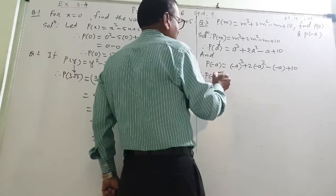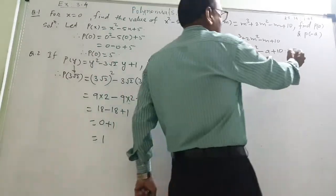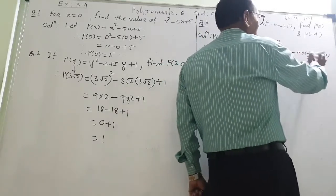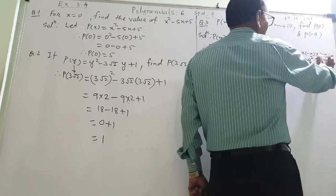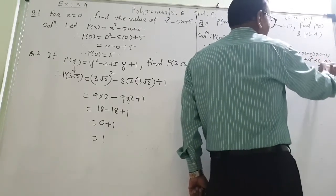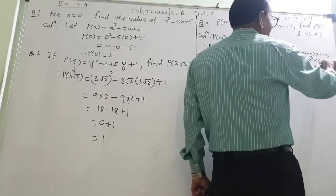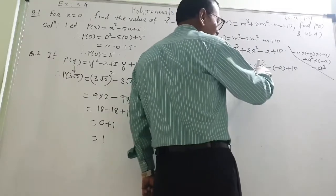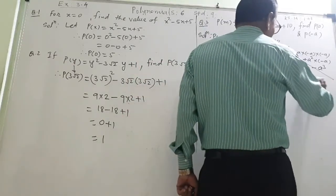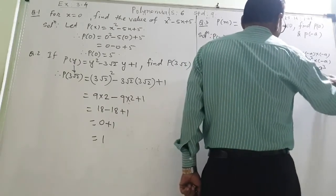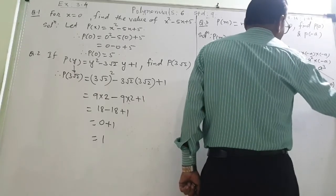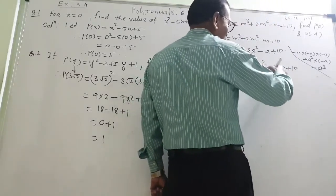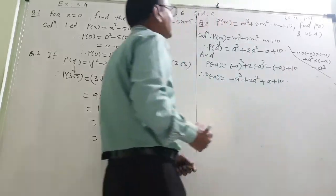Therefore, p of minus a is equal to: minus a cube means minus a into minus a — this is the meaning of minus a cube. Negative number squared: minus a into minus a, this minus into minus is plus, a into a is a square, so this will be positive — plus 2a square. This minus into minus will become plus a, and plus 10. This is the answer for question number 3.